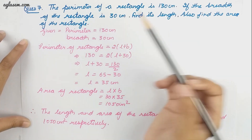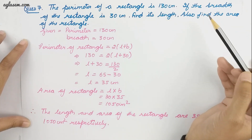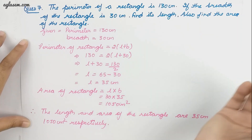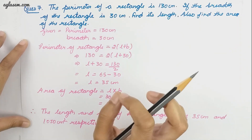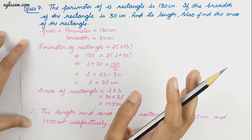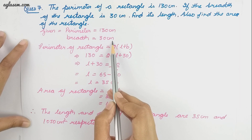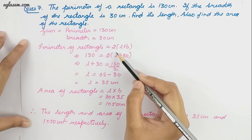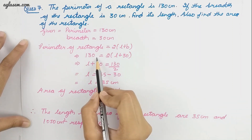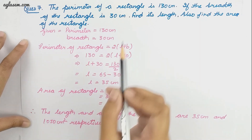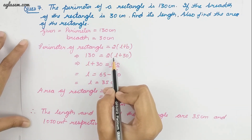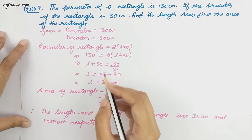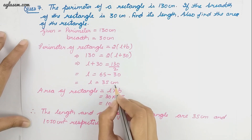Our next question: the perimeter of a rectangle is 130 centimeter. If the breadth of the rectangle is 30 centimeter, find its length and also find the area of the rectangle. Given: perimeter is 130 centimeter and breadth is 30 centimeter. Using the perimeter formula, we find the length is 35 centimeter.